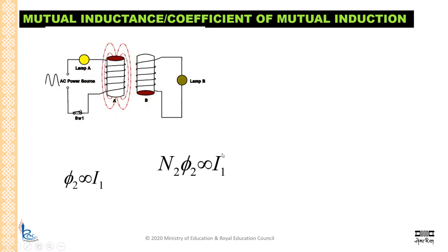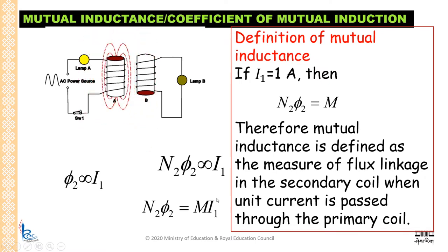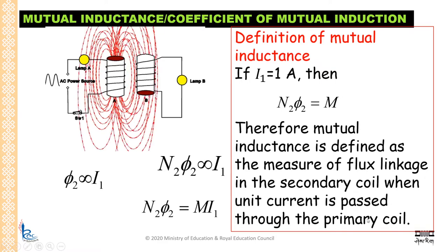To remove the proportionality, we introduce a constant M. M is mutual inductance, also called the coefficient of mutual induction. If current in the primary coil is 1 ampere, we will have N2 phi2 equal to M. From here, we can define mutual inductance as the measure of flux linkage N2 phi2 in the secondary coil when unit current is passed through the primary coil.